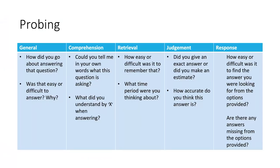The final technique in the cognitive interviewing toolbox is probing. The majority of cognitive interviewing data is likely to come from probing. Probes are basically questions about the product we are trying to test, and their purpose is to elicit verbal information about what respondents are thinking when exposed to our survey questions. We would typically start by asking general probes, such as 'How easy or difficult did you find that?' We would then ask probes based on each stage of Tourangeau's four-stage question and answer model, probing on comprehension, retrieval, judgment, and response.